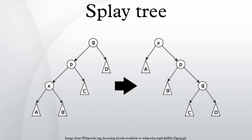Splaying. When a node X is accessed, a splay operation is performed on X to move it to the root. To perform a splay operation we carry out a sequence of splay steps, each of which moves X closer to the root. By performing a splay operation on the node of interest after every access, the recently accessed nodes are kept near the root and the tree remains roughly balanced, so that we achieve the desired amortized time bounds.